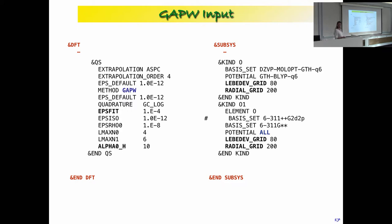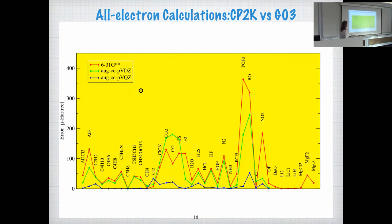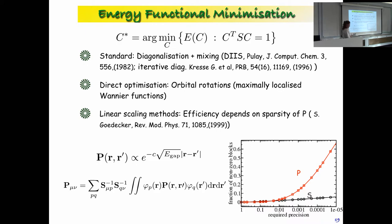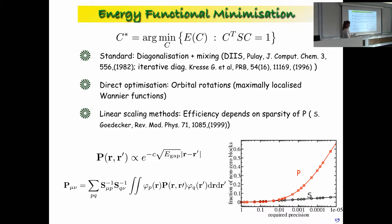Accuracy tests done years ago compared GAPW results with Gaussian09 for different small molecules. The accuracy in micro-Hartree improves as the basis set increases, because the density partitioning is more accurate with a better local basis set.